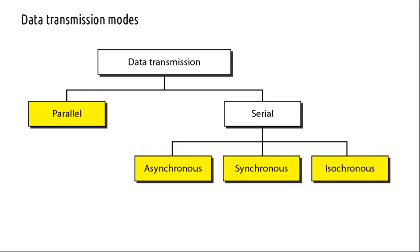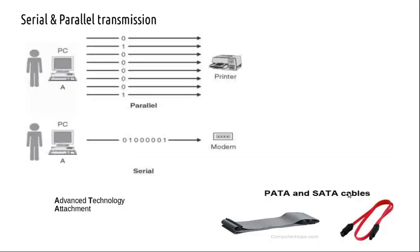All these zeros and ones — the binary digits — can be transmitted either in parallel or in serial. The serial transmission has three types; you can broadly classify them into asynchronous, synchronous, and isochronous. These are the three modes of serial data transmission.